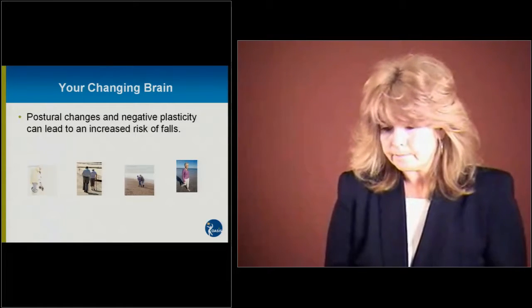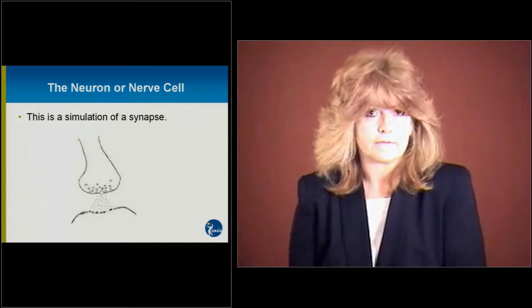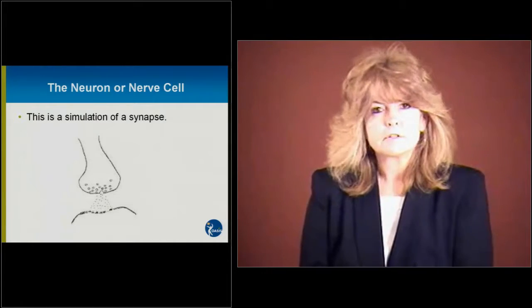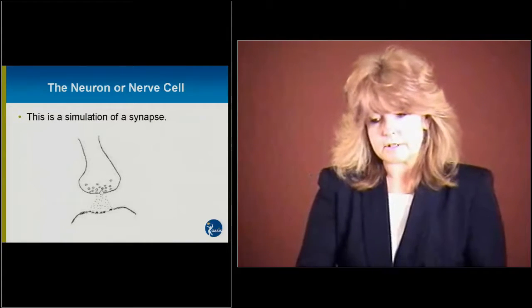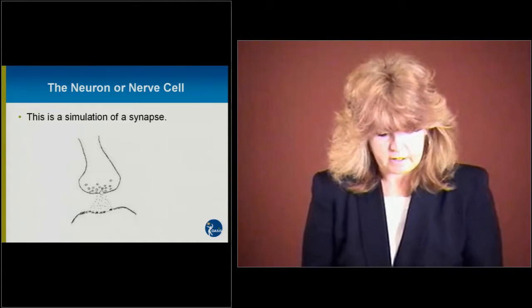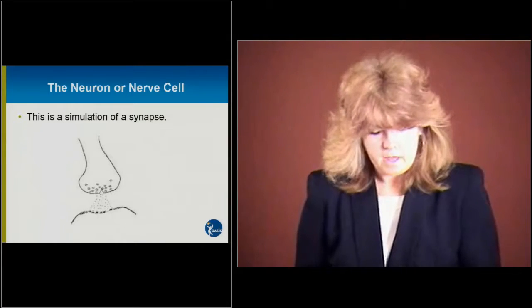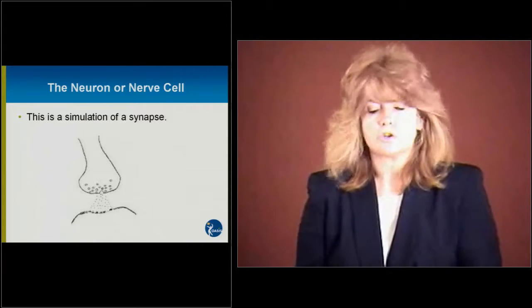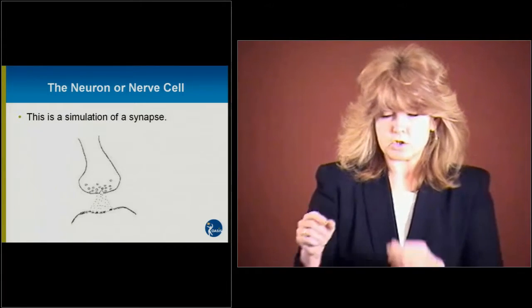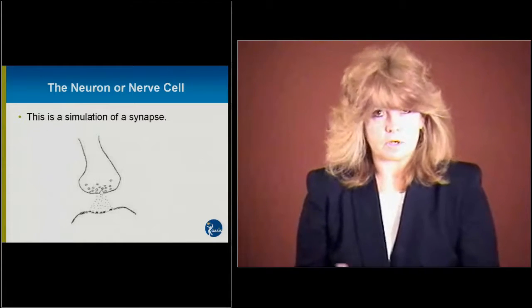So let's go ahead and look at some terms that you're going to hear quite frequently within the field of brain fitness. The first picture that you see is a simulation of a synapse. And basically, you see the term the neuron or nerve cell. The neuron or nerve cell is a cell in the nervous system that actually receives and transmits information. And in the picture, you can see more or less the information that's trying to gather to one another, to each of the synapses, to communicate.